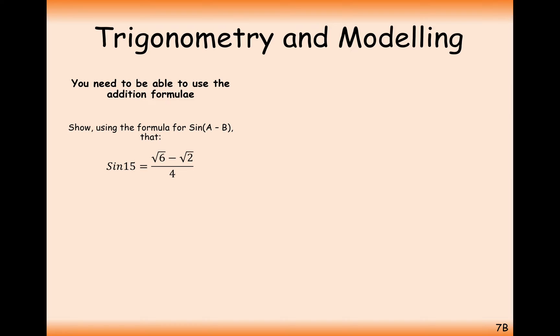In this case we want to use the formula for sine A minus B to calculate sine 15 equals square root of 6 minus square root of 2 all over 4. Well how can we get 15 by a subtraction of two other angles? Well we can do 45 minus 30 so that's what we're going to do.